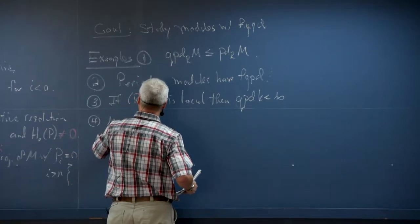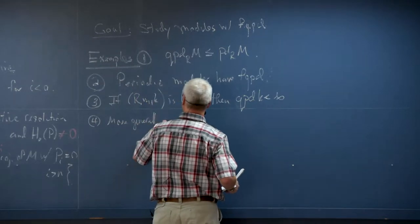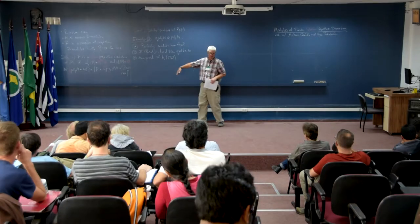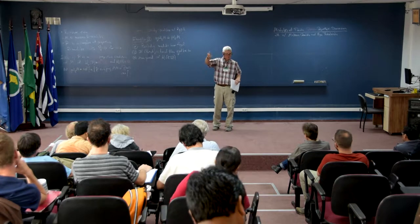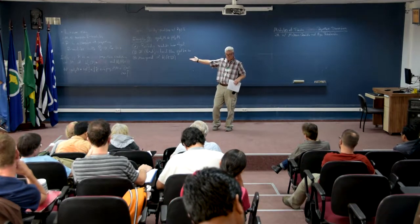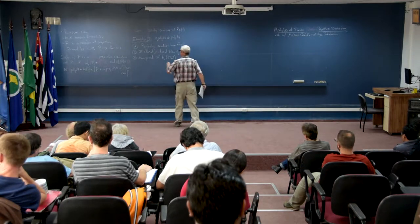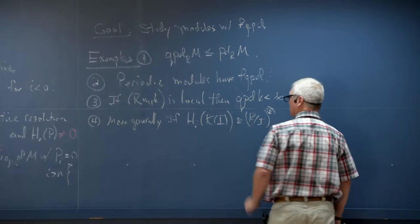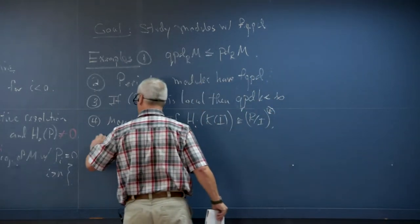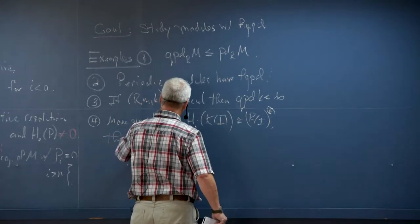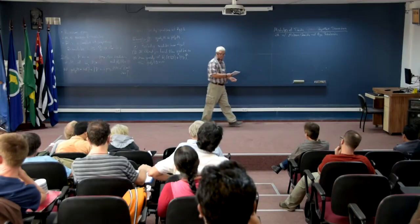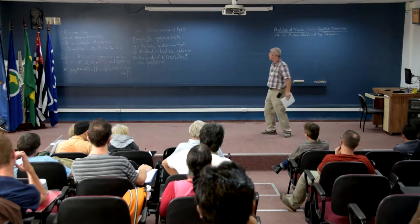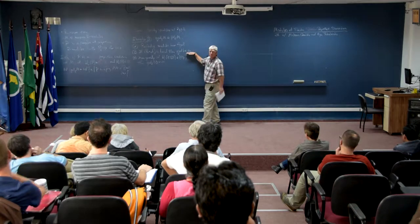More generally, if you take any ideal and take the Koszul complex on the generators of that ideal, any time the homologies of the Koszul complex are free R mod I modules — that is, isomorphic to direct sums of copies of R mod I — then the quasi-projective dimension of R mod I is finite. Mohsen and I like to say these are ideals with free Koszul homology. The residue field is just a special case of this.